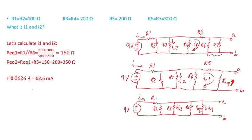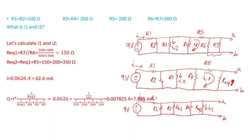The source current is 62.6 milliamps. To find I1, since R equivalent 2 is in parallel with R4, R3, and R2, I can use current division. I1 equals the source current I times one over R equivalent 2, divided by the sum of the inverses of all the resistances in parallel.